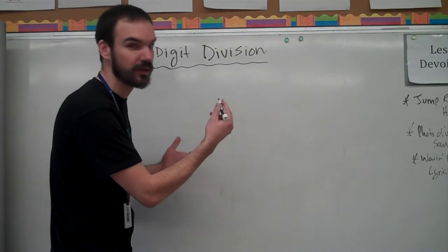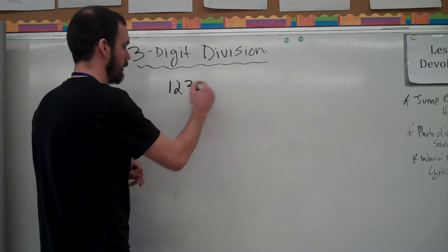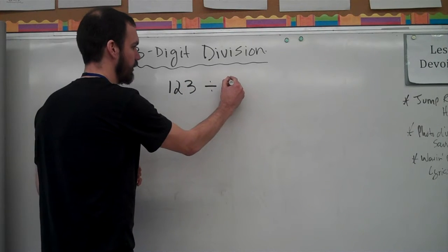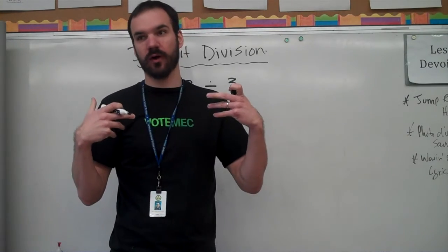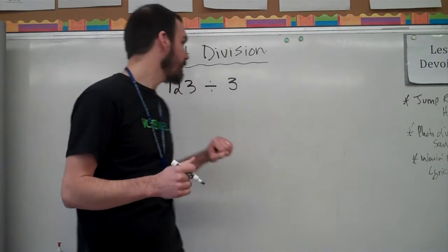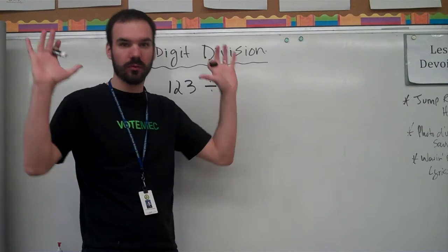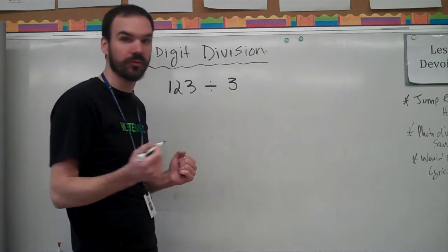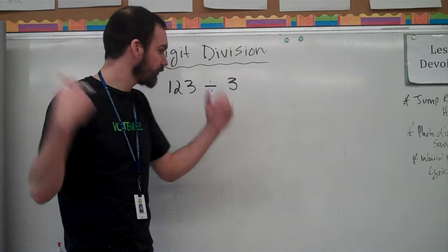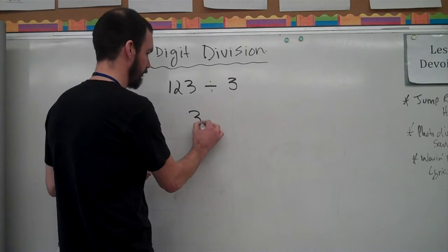And for example, I'll write the following math sentence. Let's go to something really simple: 123 divided by 3. And for a lot of us, say my vintage, having this number sentence written horizontally poses some problems. We go, oh wait a second, I don't know how to do that. That's not the algorithm I was taught when I was young in the 80s or 70s.